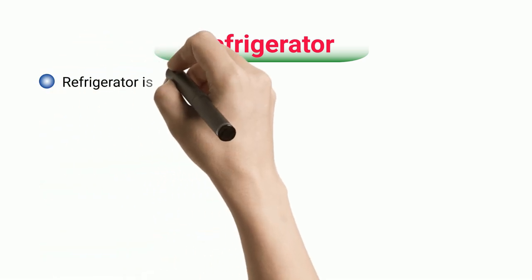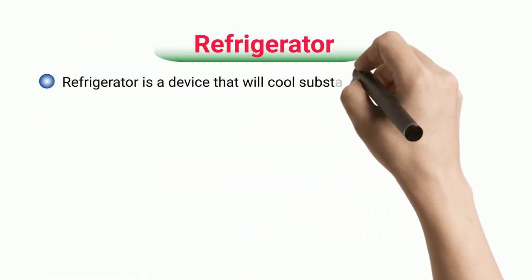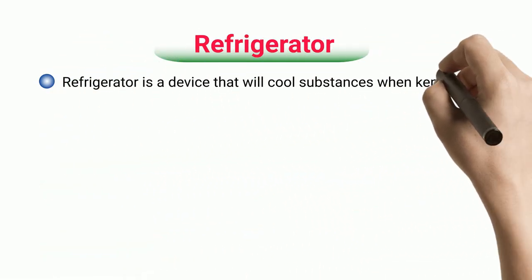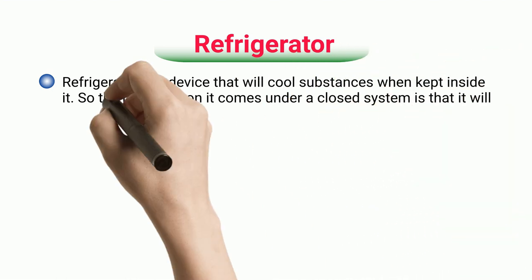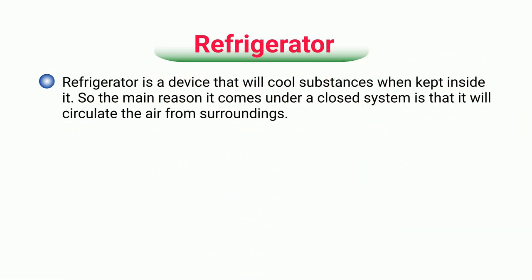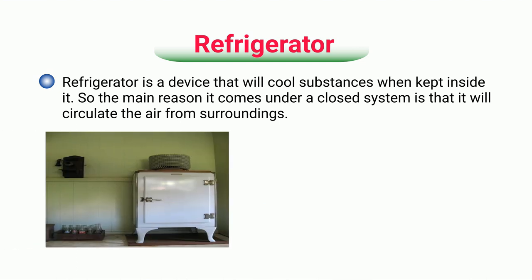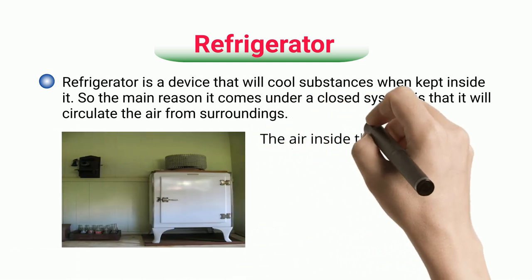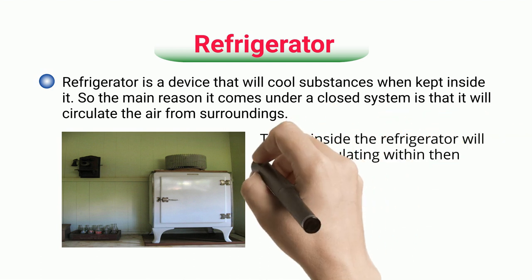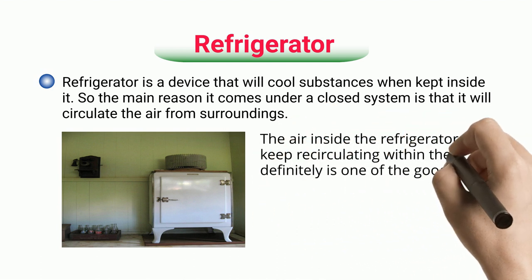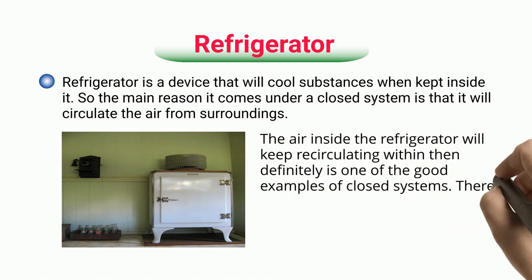A refrigerator is a device that cools substances when kept inside it. The main reason it comes under a closed system is that it circulates air from the surroundings. The air inside the refrigerator keeps recirculating within, which is why it is one of the good examples of closed systems.